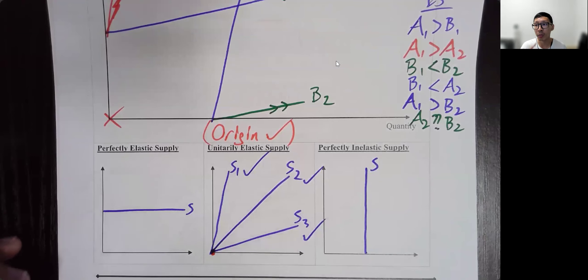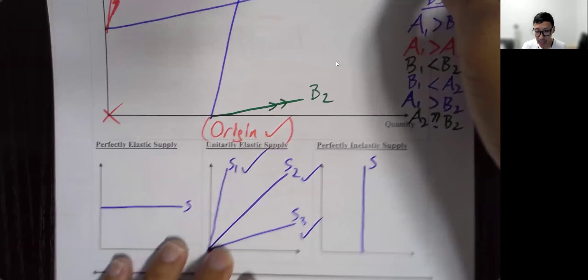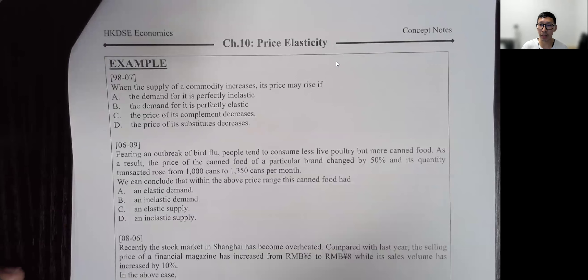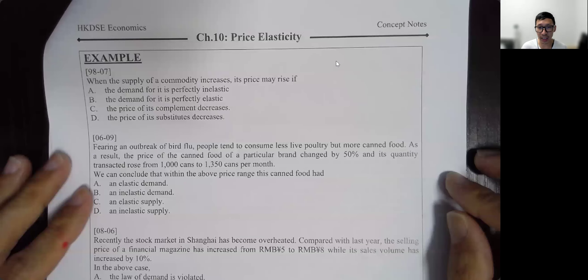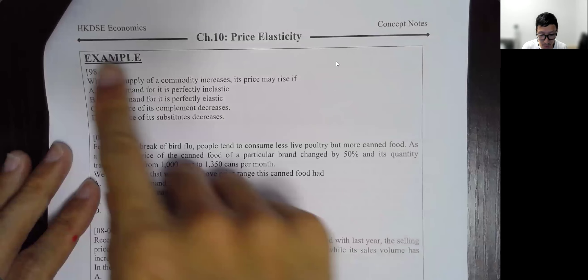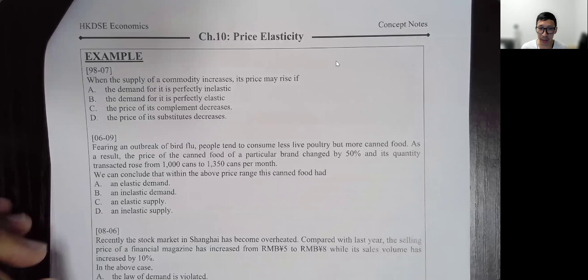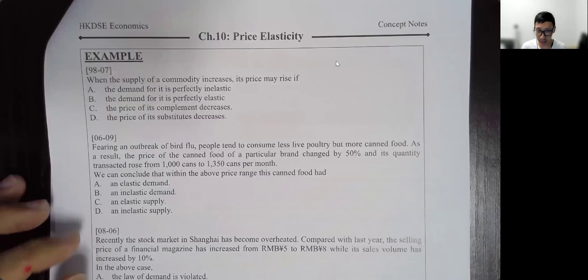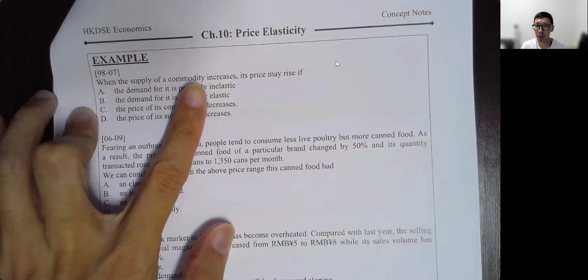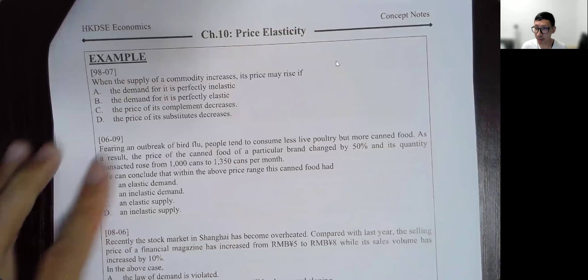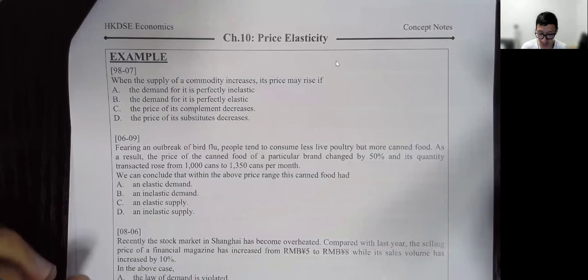That covers elasticity of supply. Now let's focus our attention on the final two pages of past paper questions and be completely done with this chapter. Starting with 1998 — when the supply of a commodity increases — we've already looked at that one in a previous video, so we'll skip it.